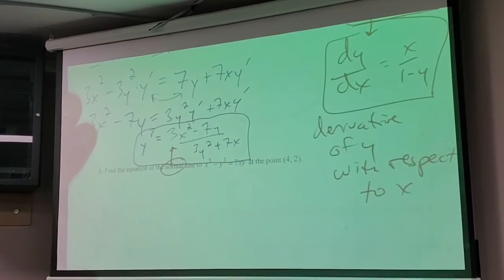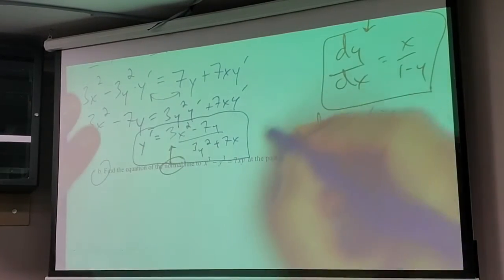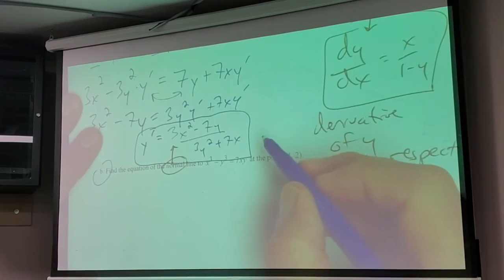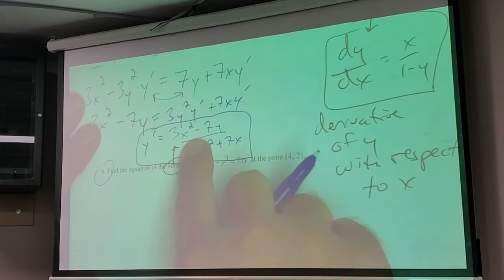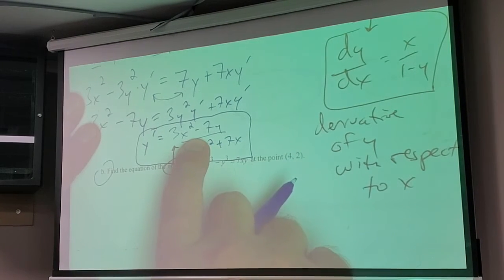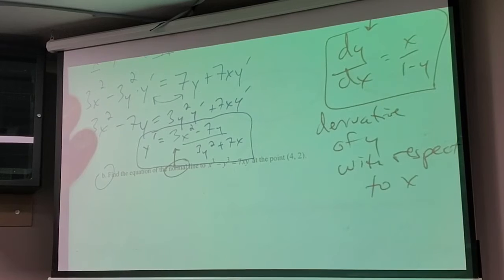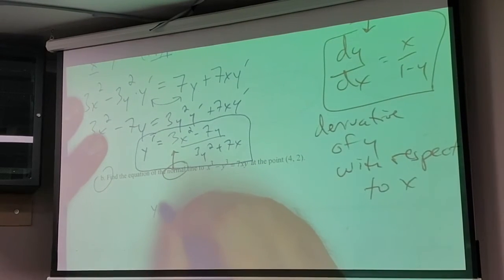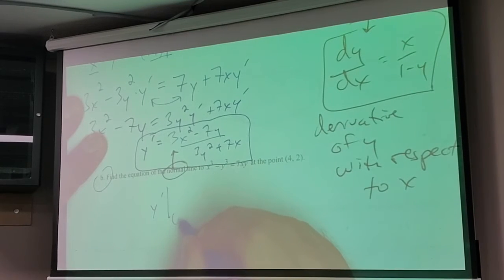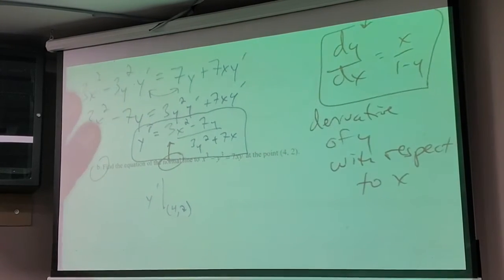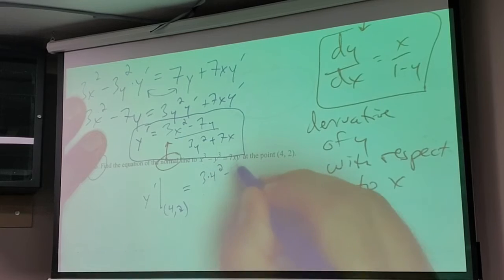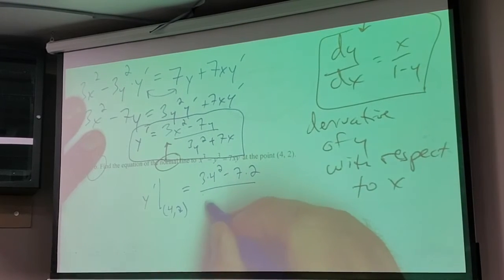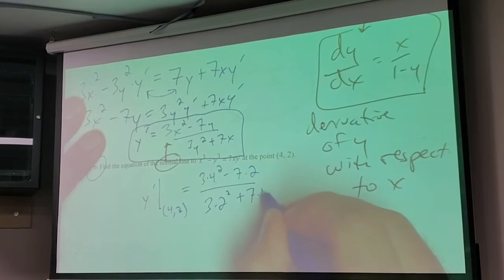Alright, I've given myself no room but we don't need much for part B. How do I get the slope that I need? Plug in x and y. So now I have a slope that is dependent on both x and y, which makes sense — I need to plug in the complete point. So y prime, evaluated at the point, would be 3 times 4 squared minus 7 times 2, all over 3 times 2 squared plus 7 times 4.